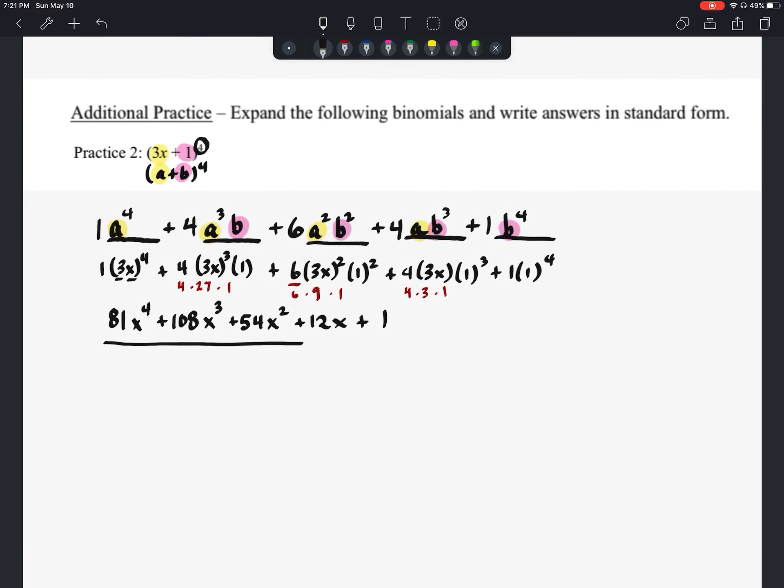And this is our answer. 81x to the fourth plus 108x to the third plus 54x squared plus 12x plus 1.